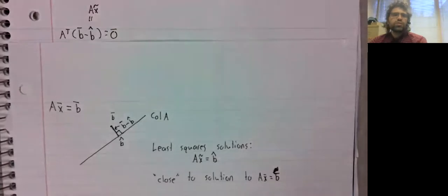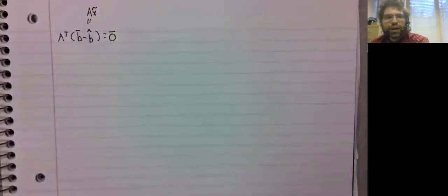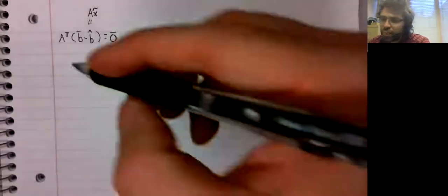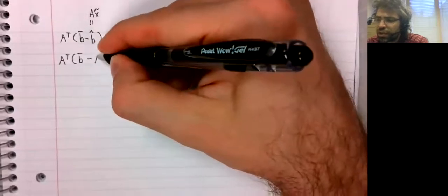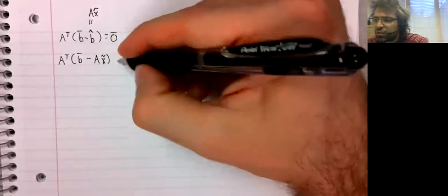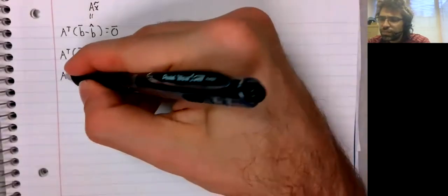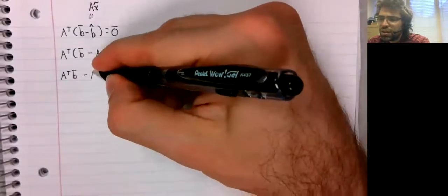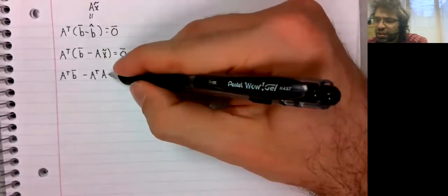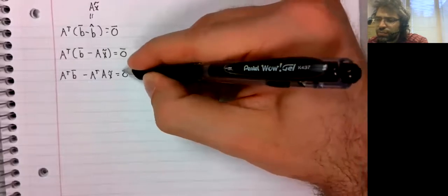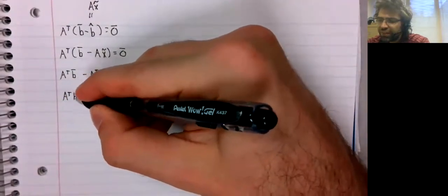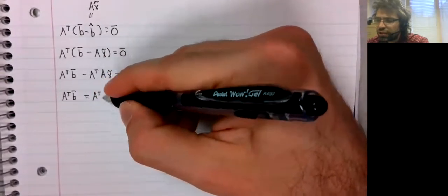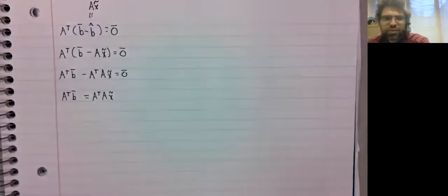So x tilde to be a least square solution must equal b hat. And we get A transpose times b minus b hat equals, A x tilde equals the zero vector. A transpose b minus A transpose A x tilde equals the zero vector. A transpose b equals A transpose A x tilde.